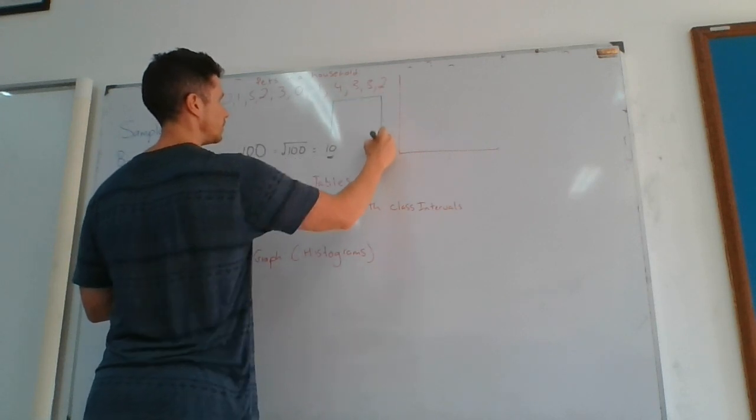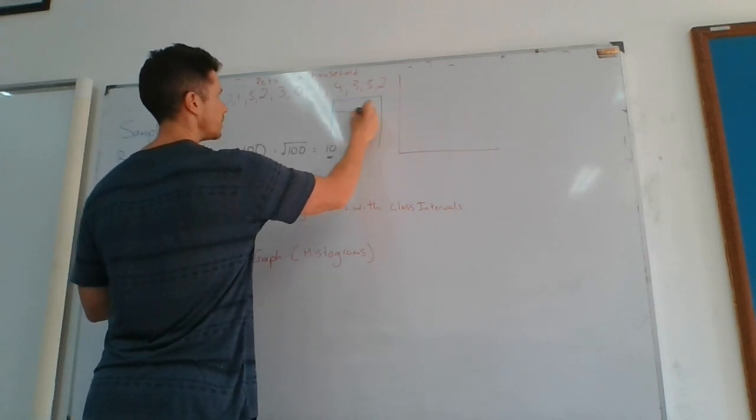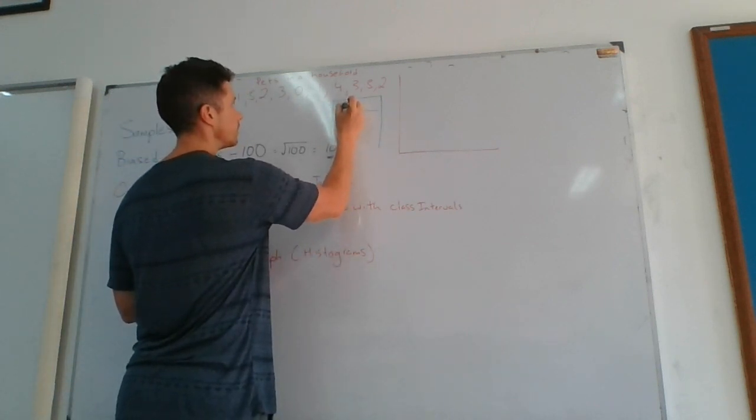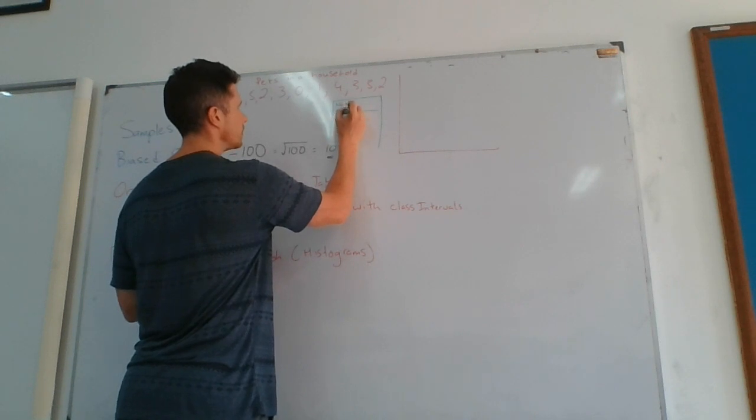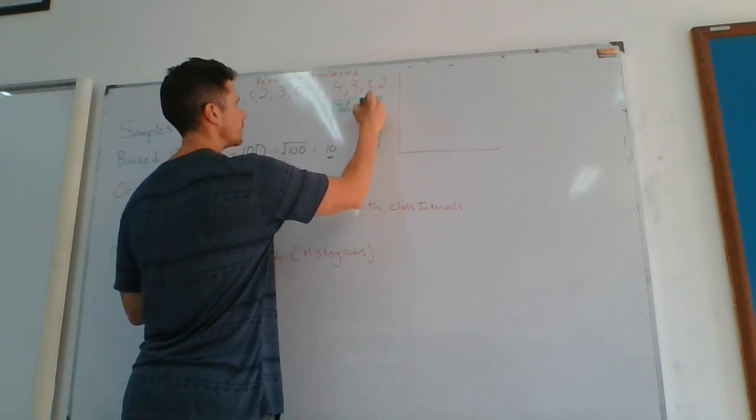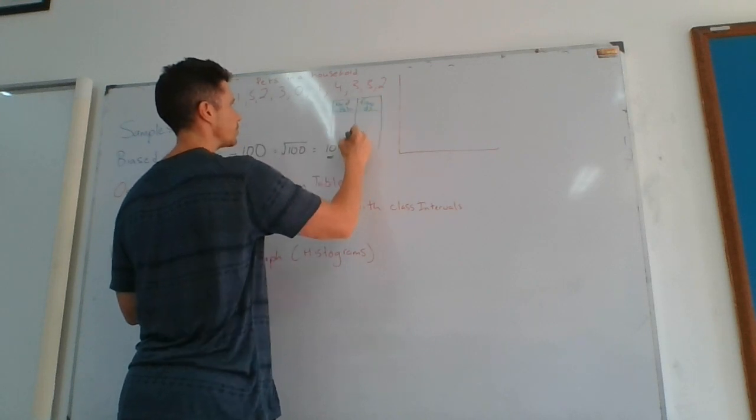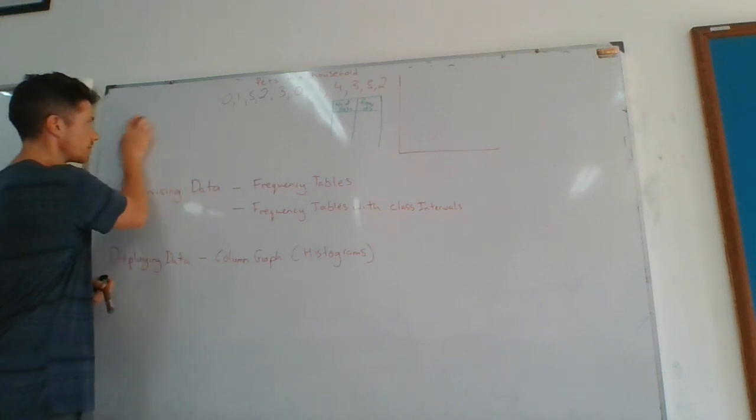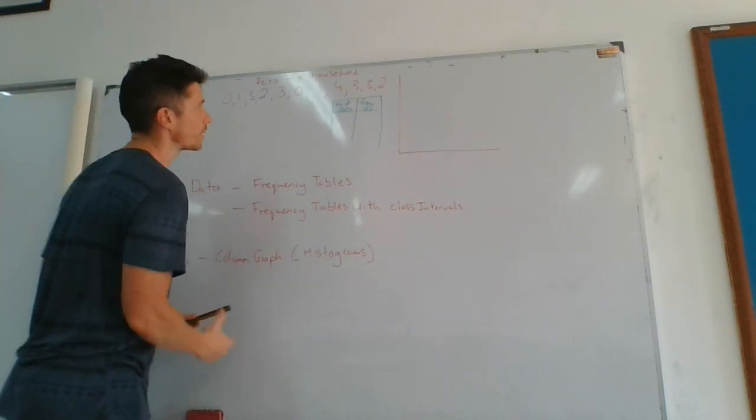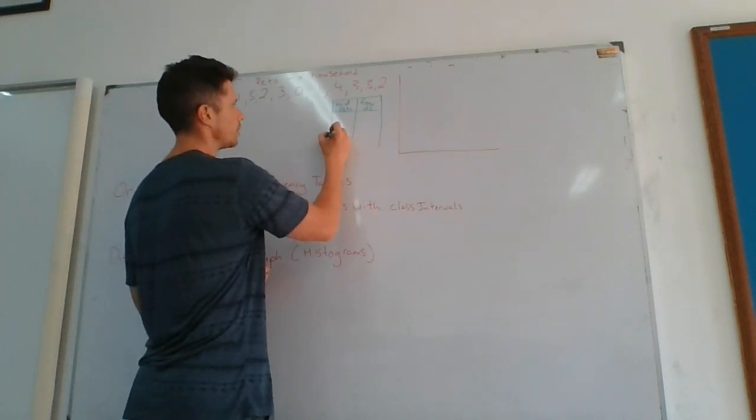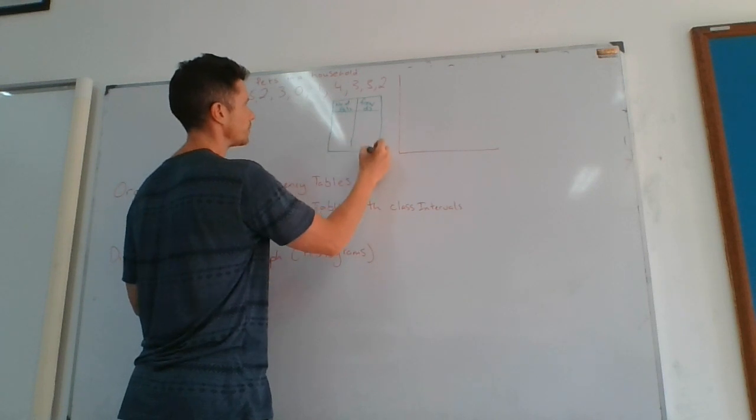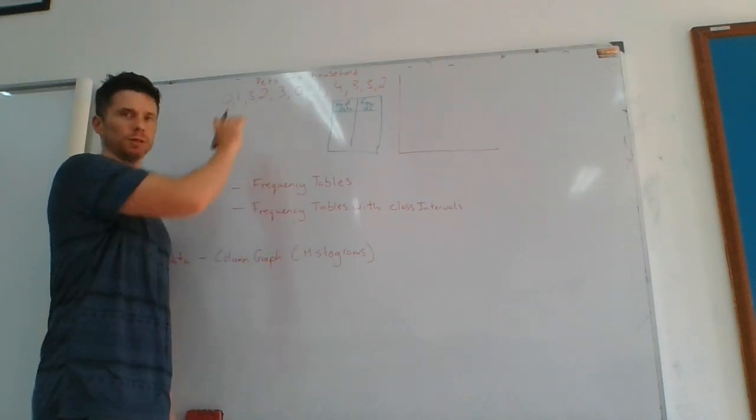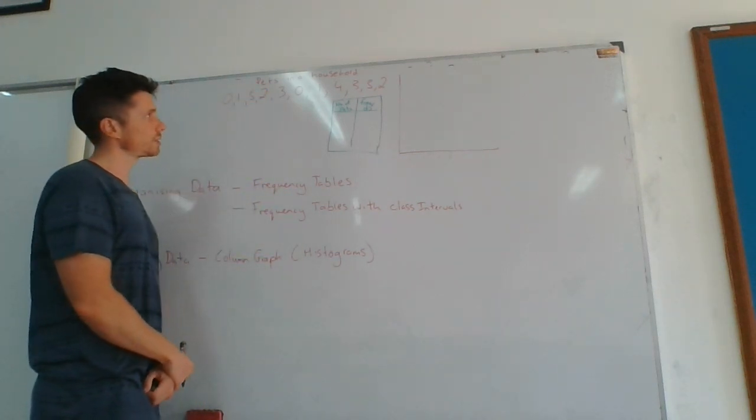So if we draw a table in green here, we have the number of pets and I'm going to have frequency here, and that's f for short. I'm going to remove this stuff so I can fit in my table. Okay, so I am looking at what do I put in the number of pets? So you put in all the options that were given in the answers. So I have zero, one, two, three, four, five of the survey.